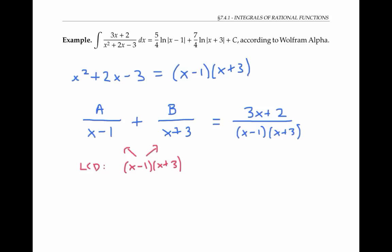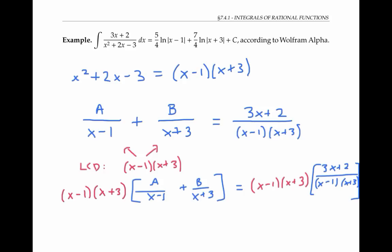To solve for a and b, I'm going to clear the denominator by multiplying both sides of my equation by this least common denominator, x minus one x plus three. When I distribute on the left side, I get x plus three times a plus x minus one times b. And on the right side, my x minus one and x plus three cancel out to give me three x plus two.